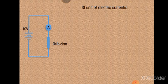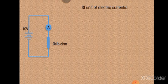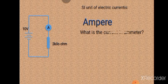What is the SI unit of electrical current? That is ampere. Next question: what is the current in the ammeter? The circuit shown has a 10-volt battery attached with a 2 kilohm resistor and an ammeter.